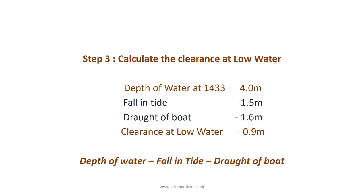Now, Step 3: we can calculate the clearance at low water. We take our depth of water when we arrived at 14:33, which was 4 metres, and we take away the fall in the tide, 1.5 metres, and we take away the draft of the boat, 1.6 metres. And that gives us a clearance at the next low water of 0.9 metres. It's depth of water minus fall in tide minus draft of boat — that gives us our clearance at low water.